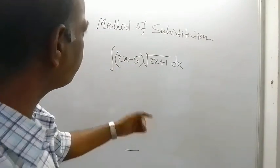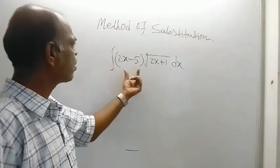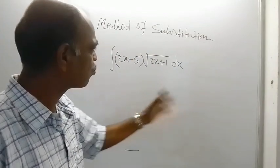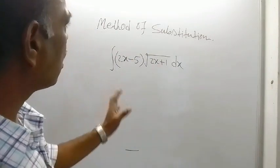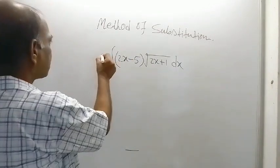Here you can see this is the given problem: integration of (2x-5) times root of (2x+1) dx. This is the given problem.